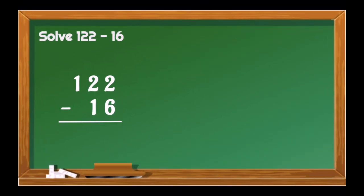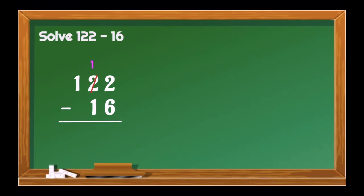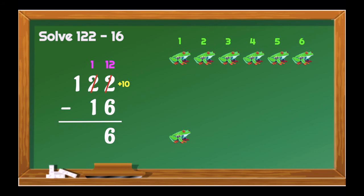Let's have another example: 122 minus 16. We start with 2 minus 6. Since we can't proceed, we need to borrow from the 10's place. That gives us 12 minus 6, which equals 6. For the 10's place, it's 1 minus 1 — no need to borrow again. 1 minus 1 is equal to 0. Then let's just bring down the 1. So, 122 minus 16 is equal to 106. Excellent!